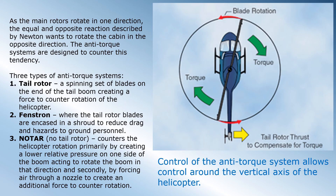As the main rotors rotate in one direction, the equal and opposite reaction described by Newton wants to rotate the cabin in the opposite direction. The anti-torque systems are designed to counter this tendency. There are three main types: first, the tail rotor — a spinning set of blades on the end of a tail boom creating a force to counter the rotation of the helicopter; second, the fenestron, where the tail rotor blades are encased in a shroud to reduce drag and hazards to ground personnel; and third, the NOTAR (no-tail rotor), which counters rotation primarily by creating a lower relative pressure on one side of the boom and secondarily by forcing air through a nozzle to create an additional counter-rotation force.